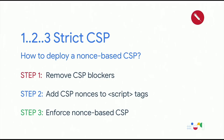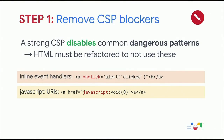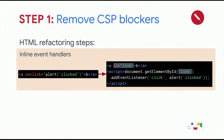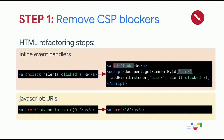To roll out nonce-based CSP on your application, there are three simple steps. Step one: remove CSP blockers. A strong CSP usually disables some dangerous patterns in HTML, so you need to refactor your site if you use these patterns. The most common ones are inline event handlers and JavaScript pseudo-URLs. For inline event handlers, you remove the event handler from the tag and instead register it programmatically through a JavaScript API like addEventListener. For JavaScript pseudo-URLs that are no-ops, you just remove them, or if there's more logic, refactor them into an inline script.